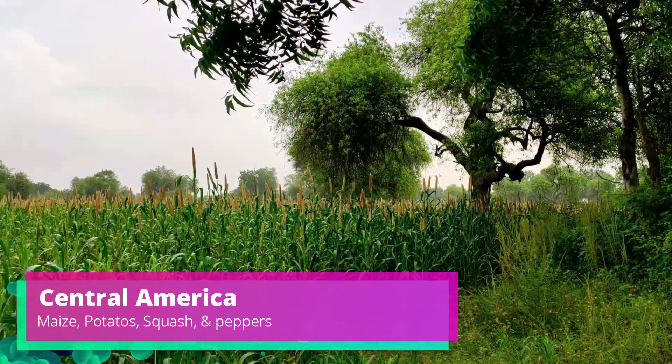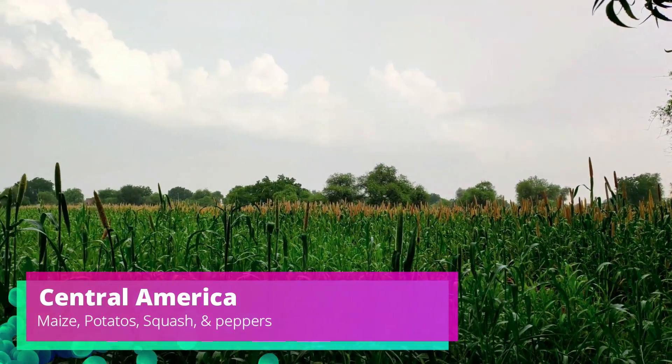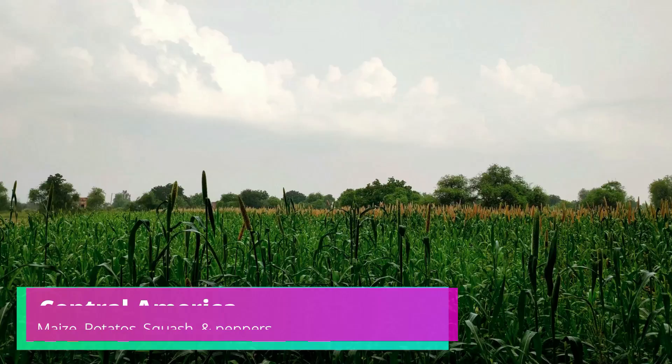Lastly, we can look at Central America where maize, potatoes, squash and peppers were grown, with diffusion happening throughout North America and also South America. One of the ways in which agricultural products and practices diffused around the world was through trade.